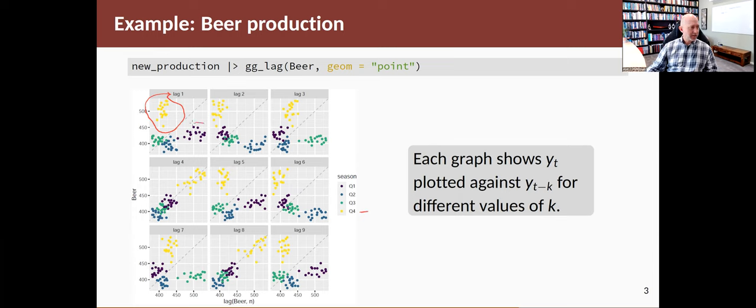On the other hand, if I take, for example, these points here in the purple color, these correspond to quarter one on the y-axis. So the previous quarter will be quarter four of the previous year on the x-axis. So it enables us to look at how different values of the time series relate to lagged values in the same series.